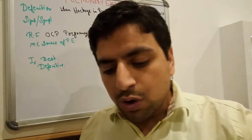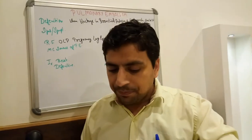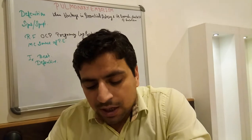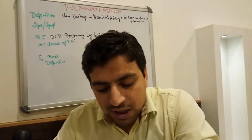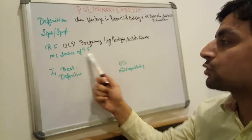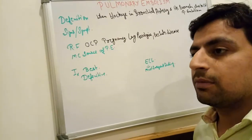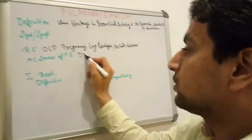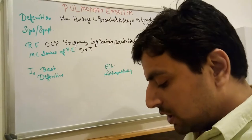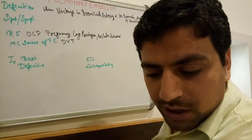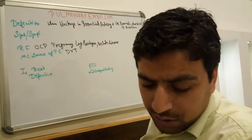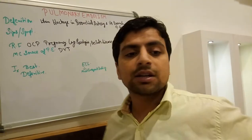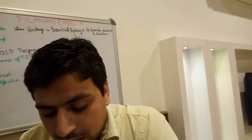Another question: the most common source of pulmonary embolism is — option A: amniotic fluid embolism, option B: renal artery embolism, option C: large vein of legs, option D: cardiothoracic surgery. The most common source of pulmonary embolism is DVT — deep vein thrombosis. So the answer is option C: large vein of legs.